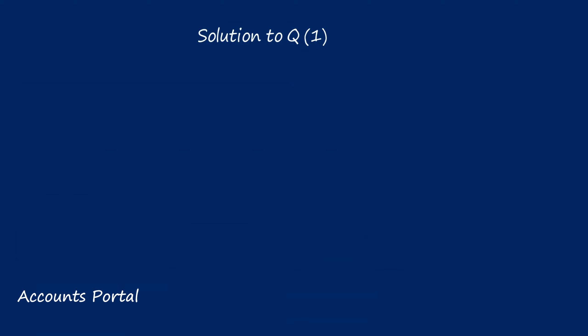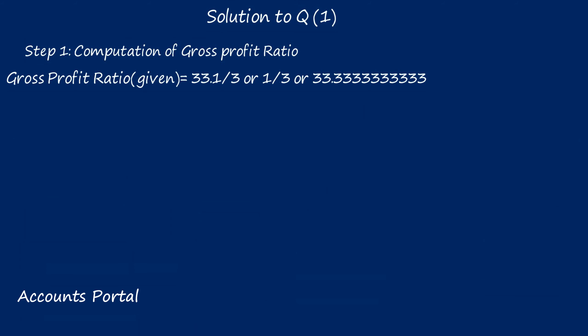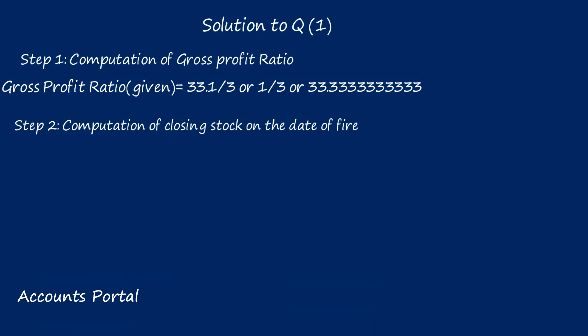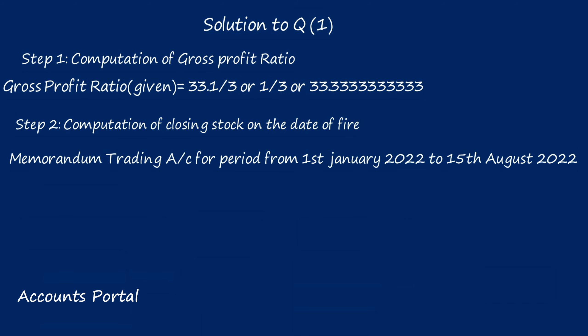Solution to question number one. Step 1: computation of gross profit ratio. Since the gross profit ratio is given in the problem, we consider it as it is — gross profit ratio equals 33⅓% (given). Step 2: computation of closing stock on the date of fire. We prepare the memorandum trading account from the beginning of the year till the date of fire — that is, from 1st January 2022 to 15th August 2022.